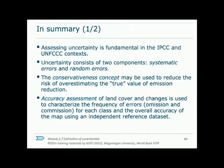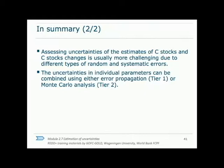In summary, while it might not be the most exciting part, assessing uncertainties is a fundamental part of the emission estimate process. It consists of both systematic and random errors. Random errors can be reduced as much as possible, and systematic errors can also be quantified and used to remove biases in the estimates. This is done for land cover and land cover change data using an accuracy assessment. Uncertainties in carbon stock and stock changes are often larger and more difficult to quantify, but regardless should be identified whenever possible. The final step is a combination of uncertainties through either error propagation or Monte Carlo analysis.